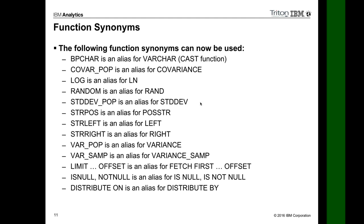Function synonyms — these are just function names used in other products where the name differs from DB2. We'll support all these names as synonyms. For example, on Netezza you might use 'distribute on' whereas DB2 uses 'distribute by' — just a slightly different syntax. So far we haven't done a lot; it's basically just synonyms. But it gets better, folks — hang on the line, you'll see some neat stuff in a minute.